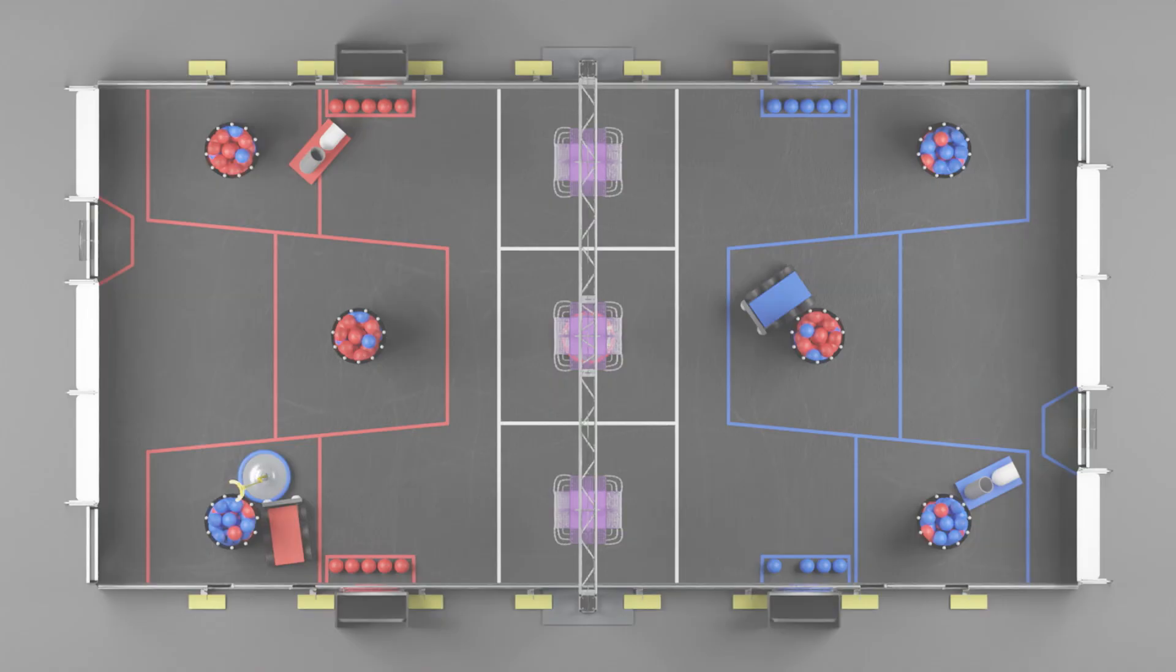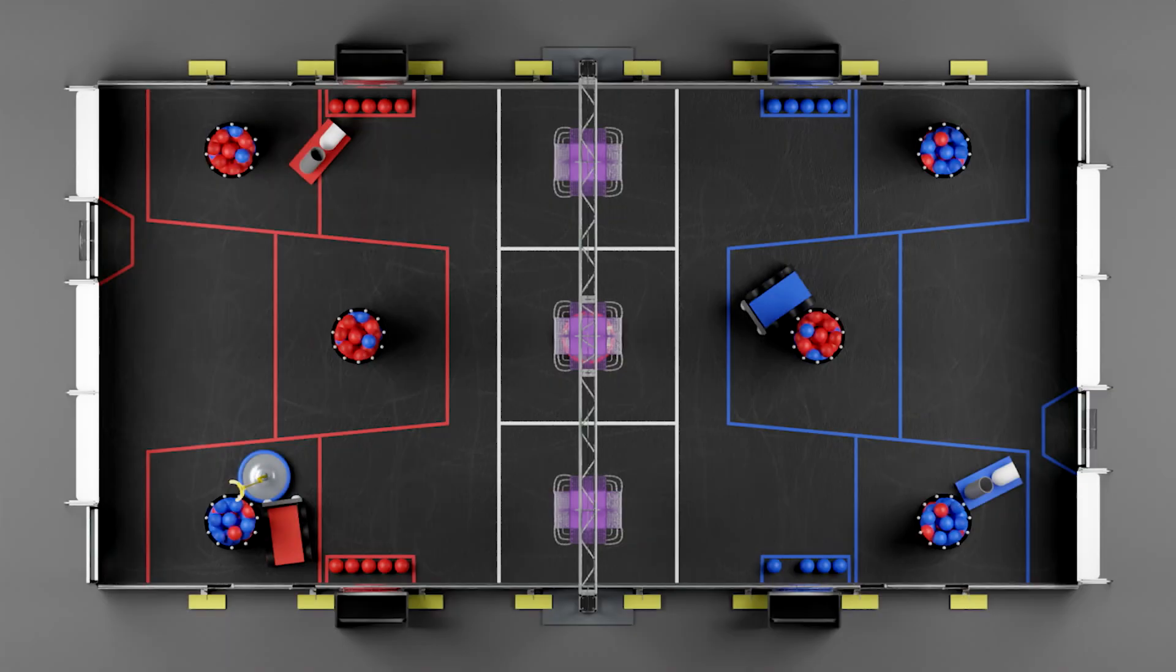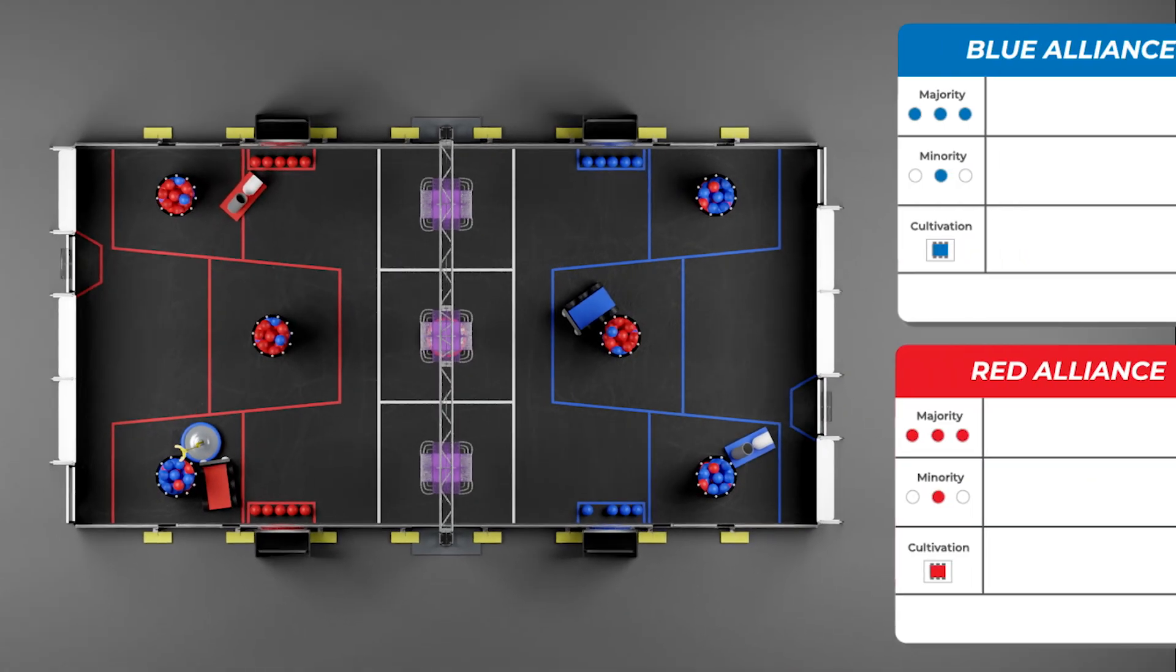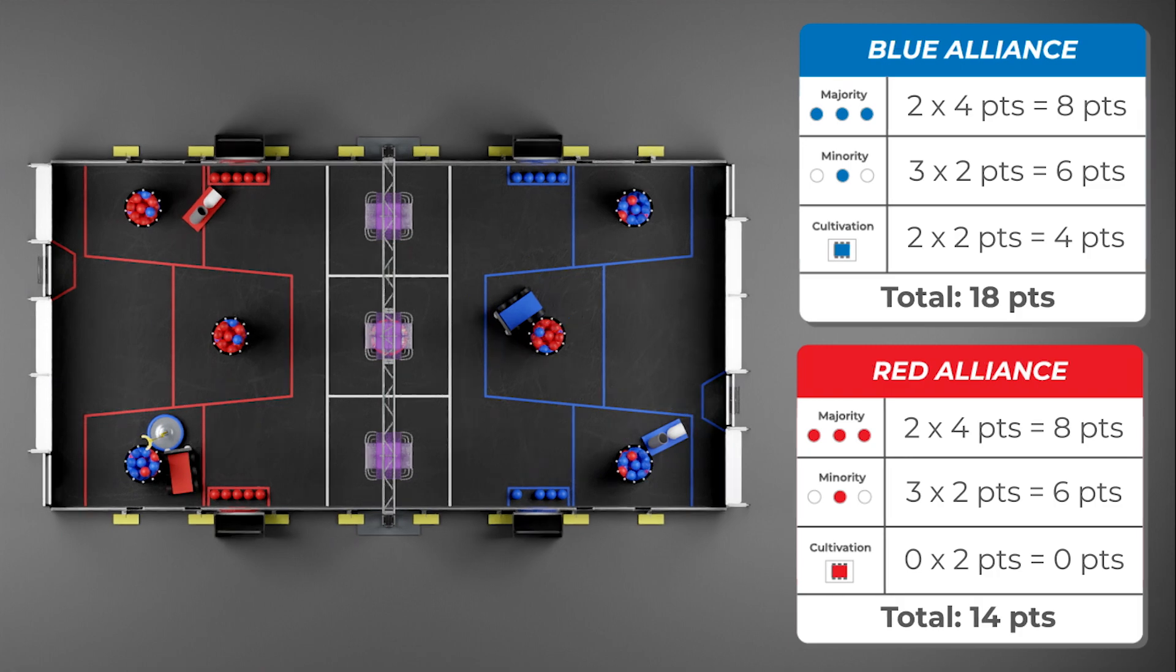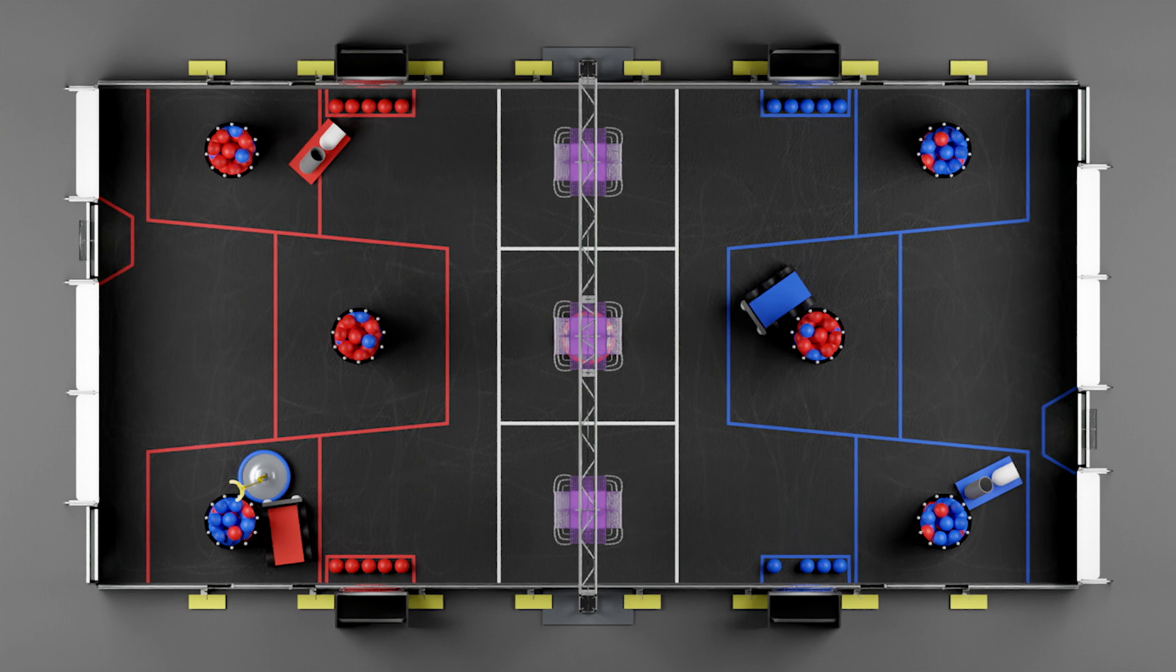Every 10 seconds in the match, the field is inspected and scored. During inspection, alliances earn points for their silos or farmers markets in which they have a majority, every silo or farmers market in which they have a minority, and for every plot they are cultivating. Either alliance can also gain points from mills. There are a total of 13 inspections during the tele-operated period.